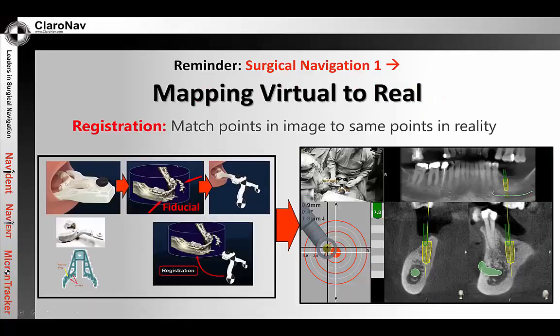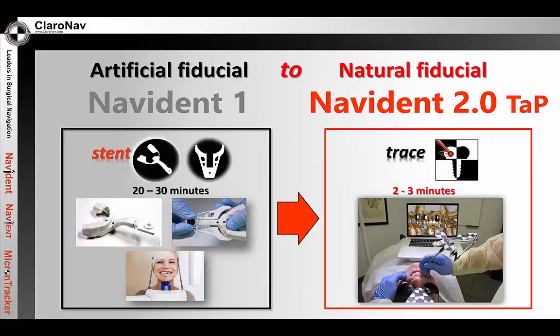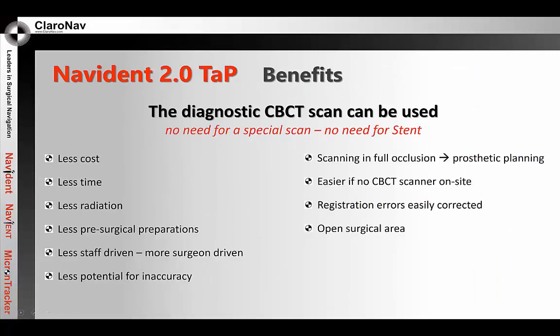Last time, we said that in order to perform surgical navigation, one of the basic principles is the registration of the actual patient with their virtual on-screen representation, which is the CBCT scan. Previously, we had to prepare a special stent and have the patient scanned with an artificial fiducial inside their mouth. Now, with the introduction of Navident 2 and trace registration, the stent and fiducial are no longer needed. The patient's teeth, crowns, or abutments can now serve as our natural fiducial for the registration. This significantly reduces the potential for inaccuracy, and there is no need for a special scan — so less radiation, less time, and less cost.